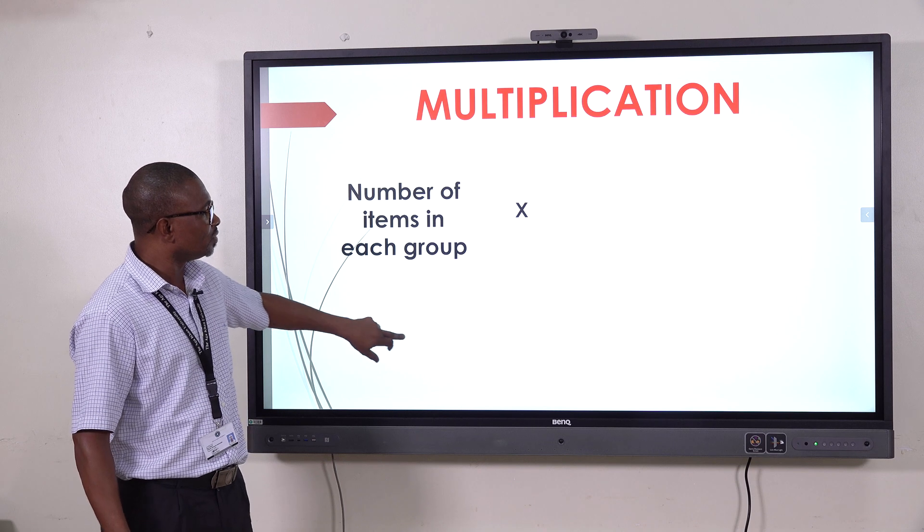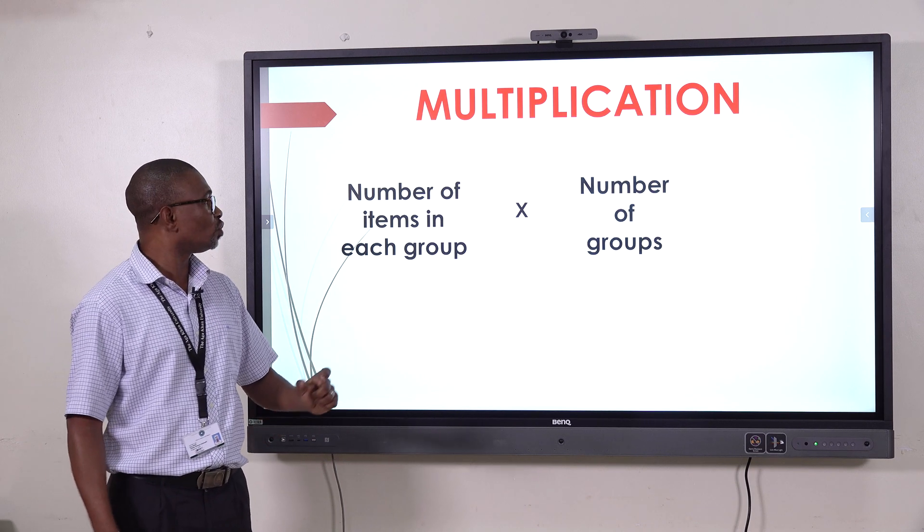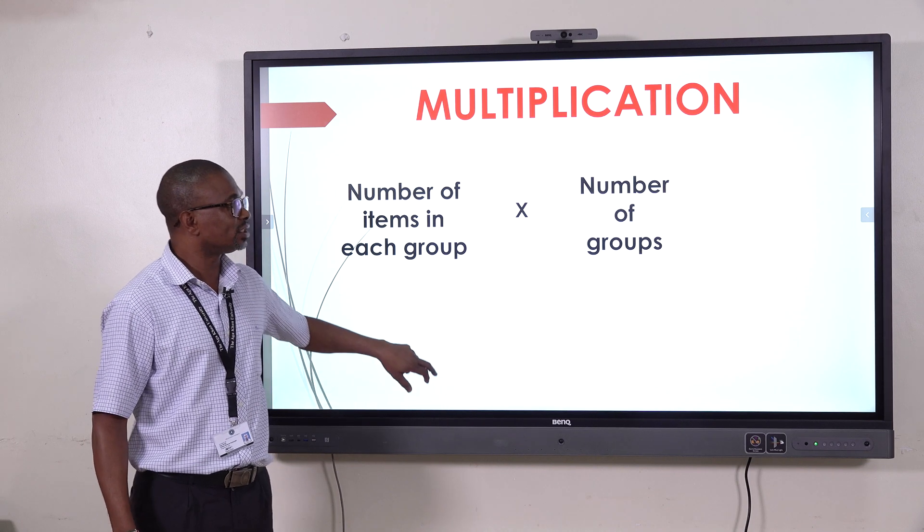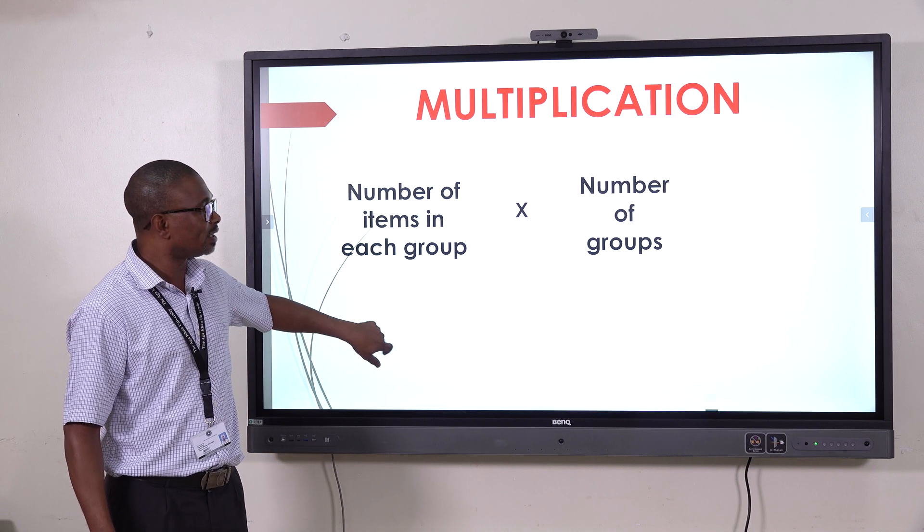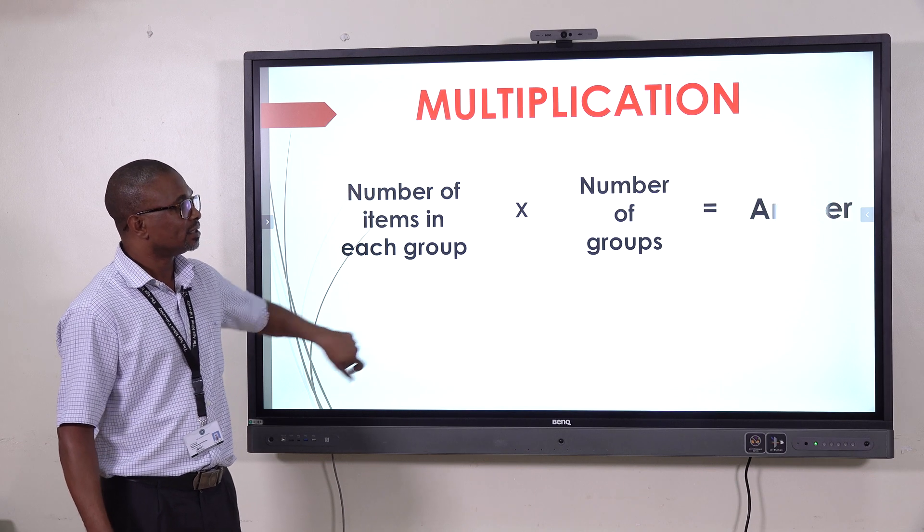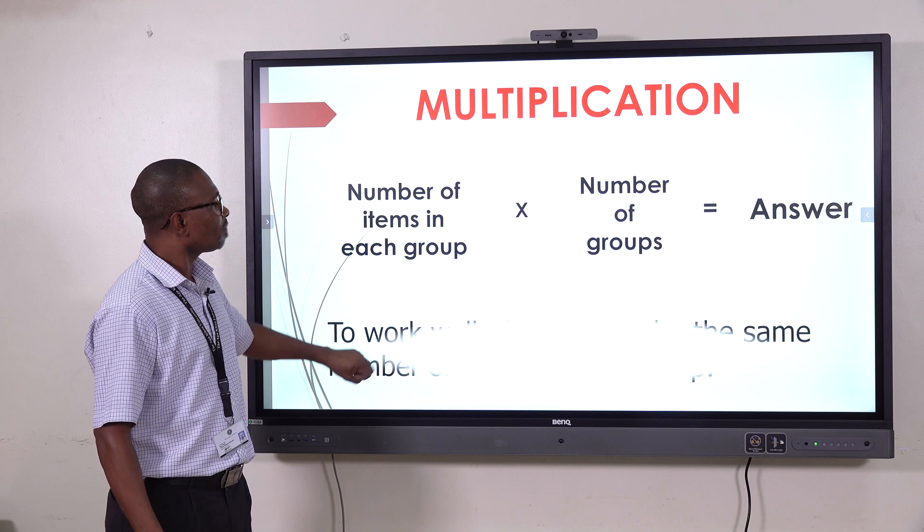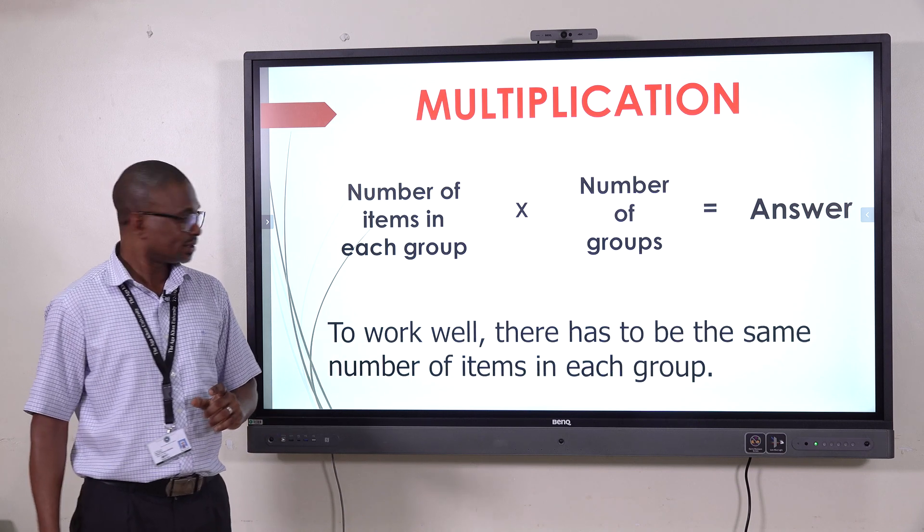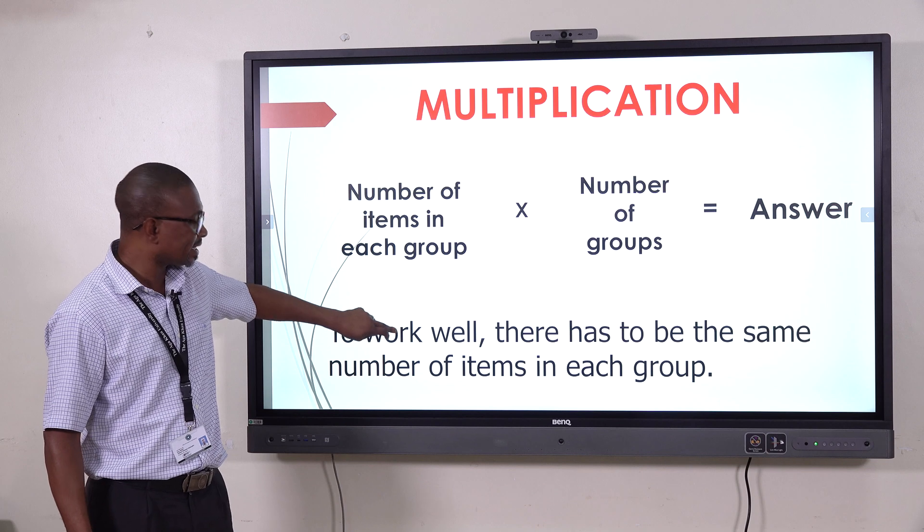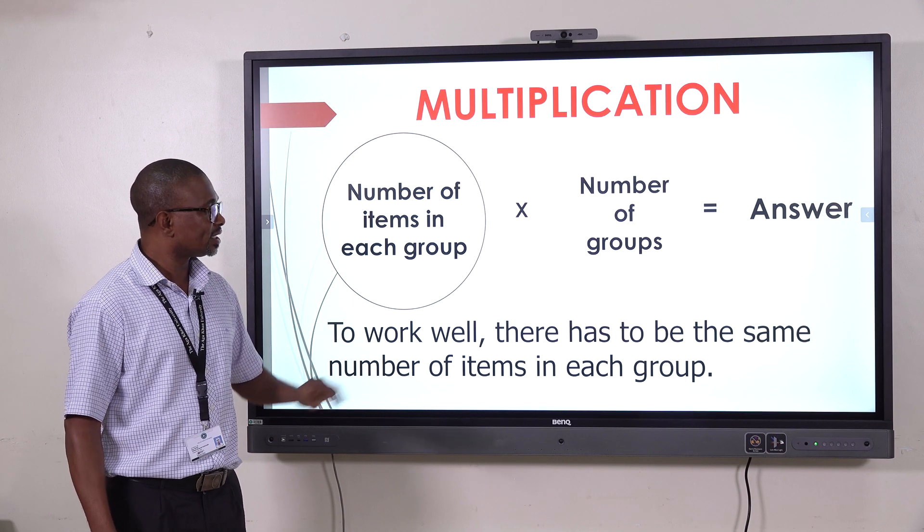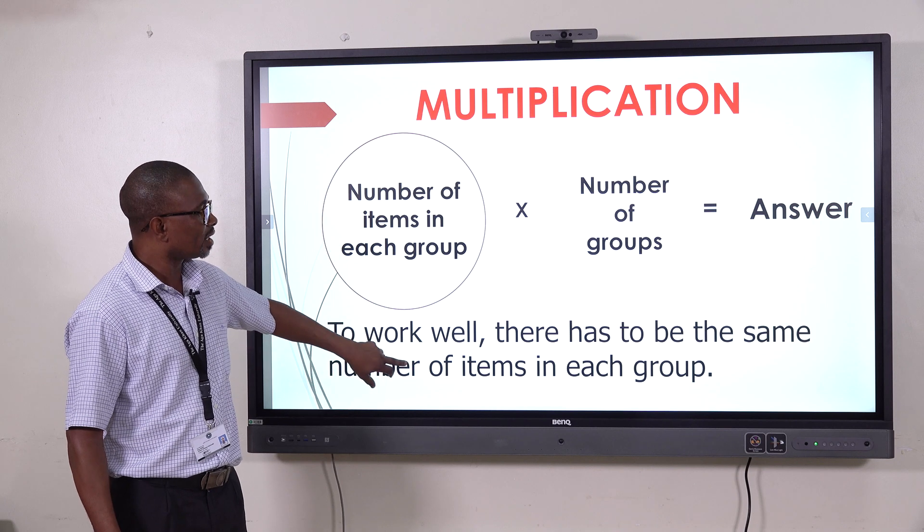So, we have number of items in each group. And there we have got the number of groups. After you multiply those, then we get our answer. But remember this, to work well, there has to be the same number of items in each group. So, that everything will work well.